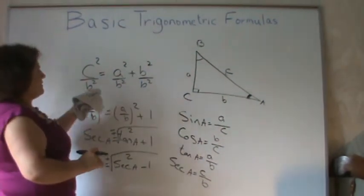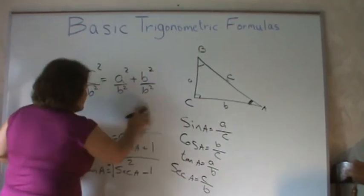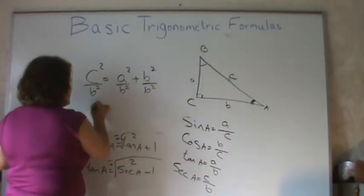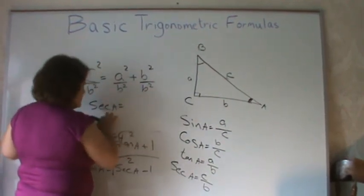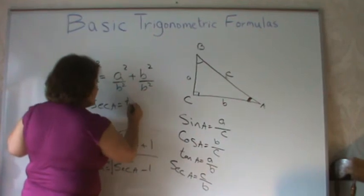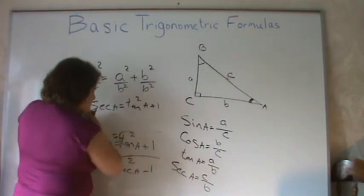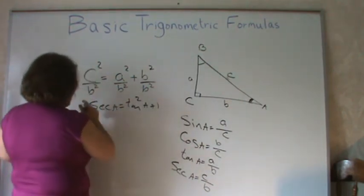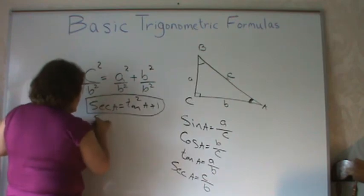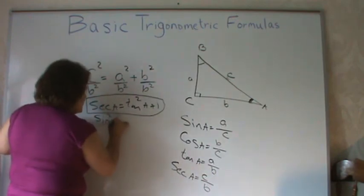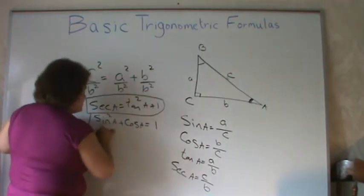You can also divide by a². A lot of students have a very hard time finding the relationship — especially in Calculus 2 — between secant and tangent. The identity secant squared minus tangent squared equals 1 is very useful. Let me write the other one: sine squared A plus cosine squared A equals 1 — that is identity number 2.